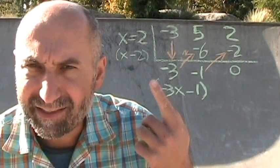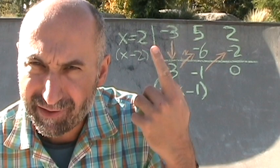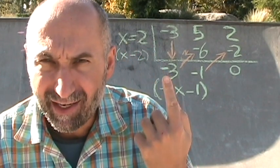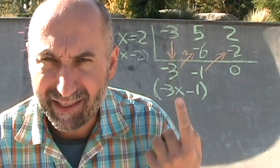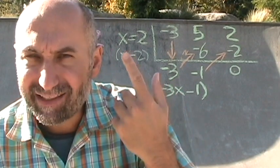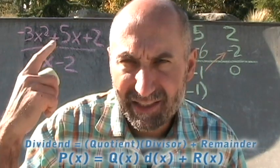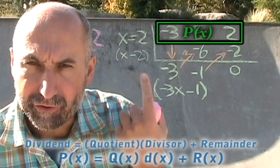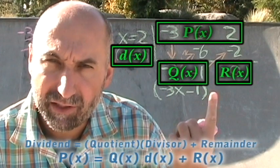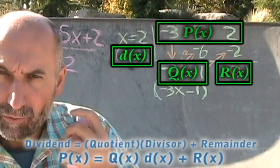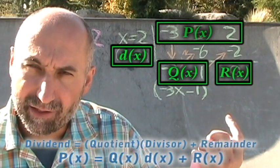So when you write these out, that's just X minus 2. When it's X is equal to 2, that's just in factor form, it's X minus 2. And this guy is negative 3X minus 1. Now, if you're going to write this out as the division statement, what you could do is, this is your P of X is equal to your Q of X times your D of X plus your remainder. Your remainder happens to be 0. So we're just going to write down the division statement right down here.